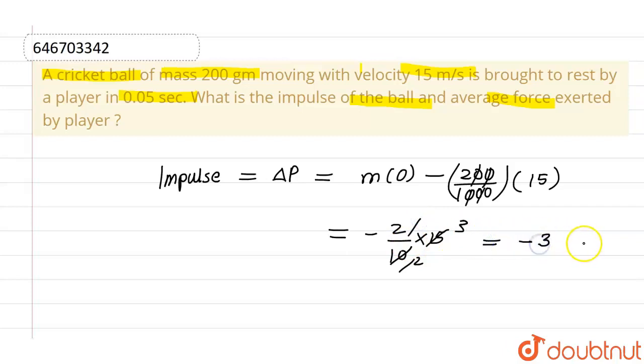So we have minus 3 kilogram meters per second. This is the impulse. Now we have to find out the average force. Average force will be given by change in momentum divided by time.